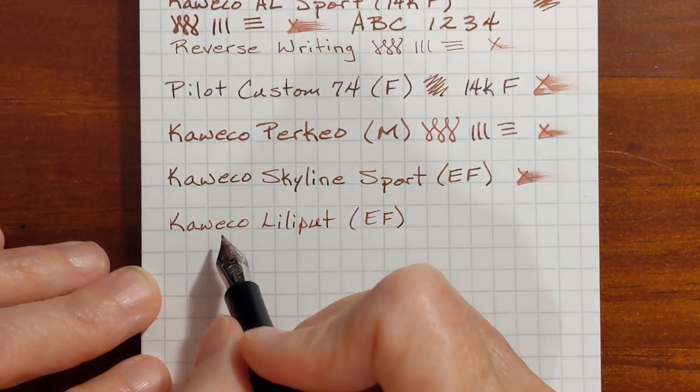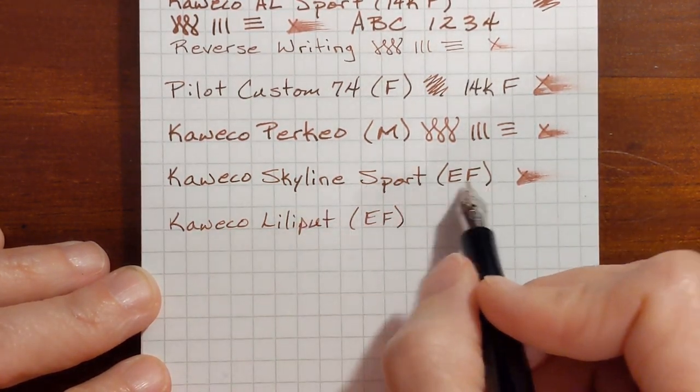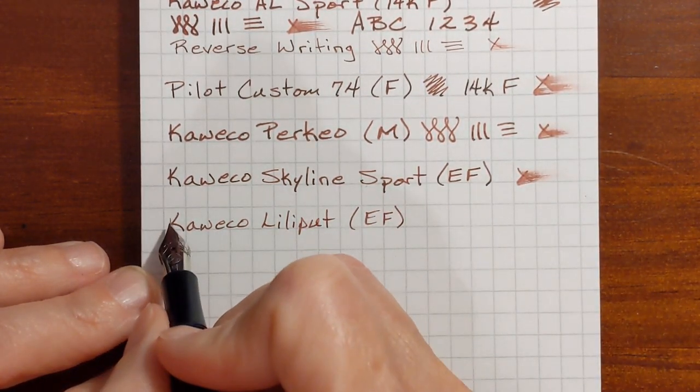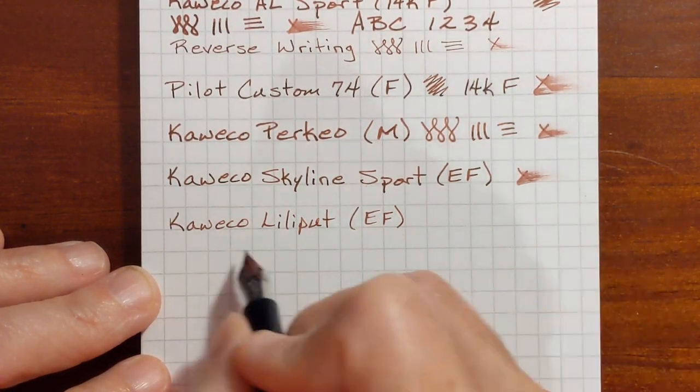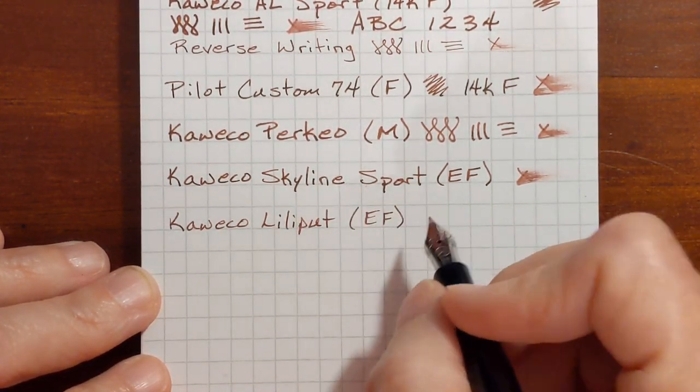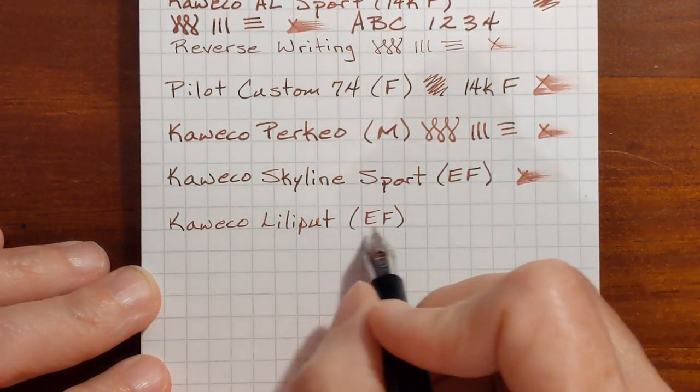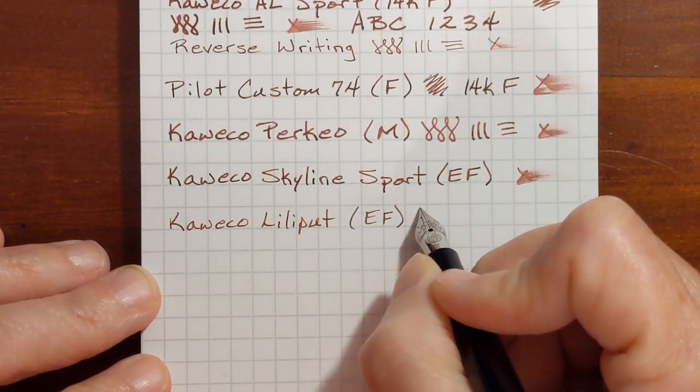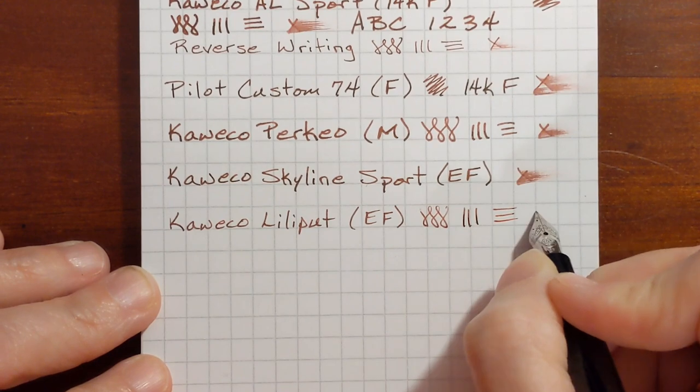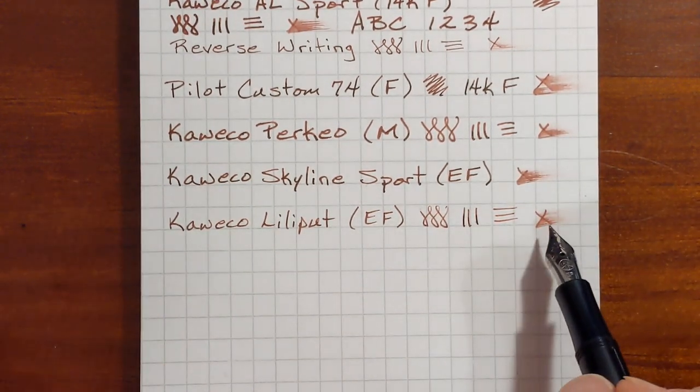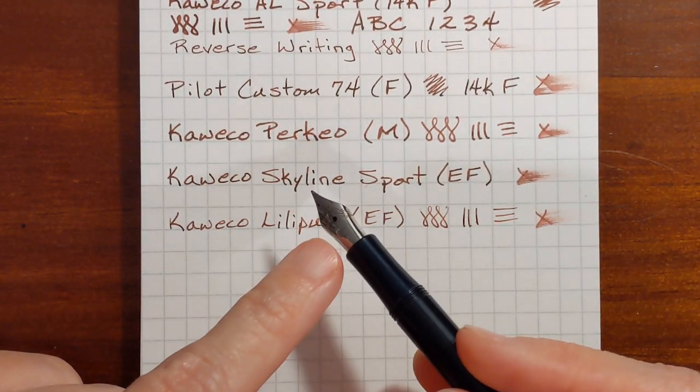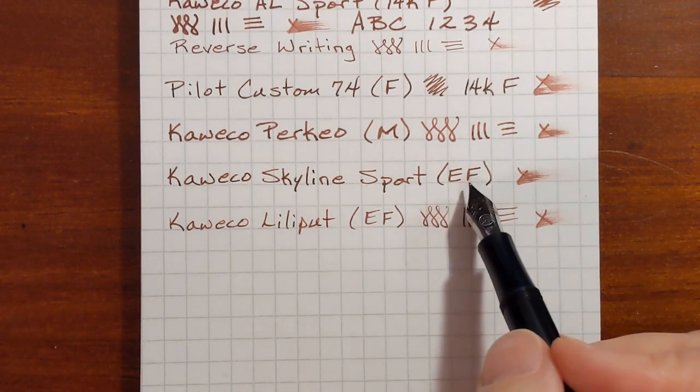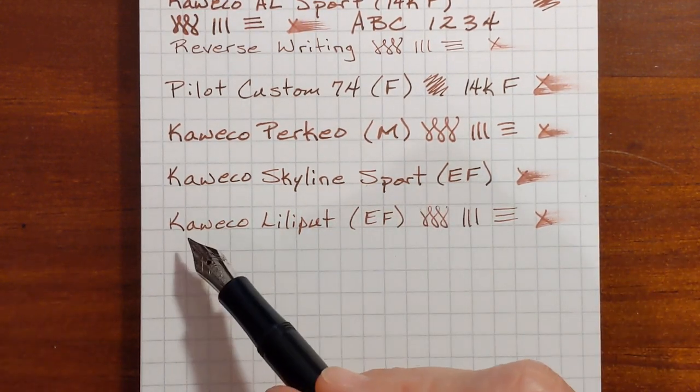Yeah this is supposed to be the same nib as the nib on this Skyline sport but you see it had a little bit of a hard start here and it just feels drier than this one. I can tell it's putting down less ink. Now one thing about this nib, it doesn't get drier as I write like my extra fine in the Skyline does, but it just writes dry from the get-go.